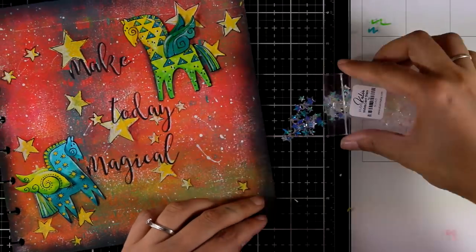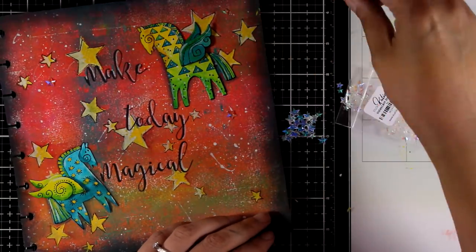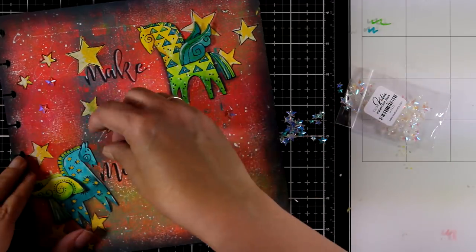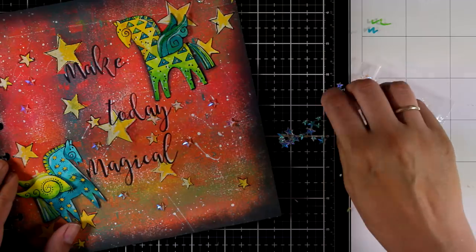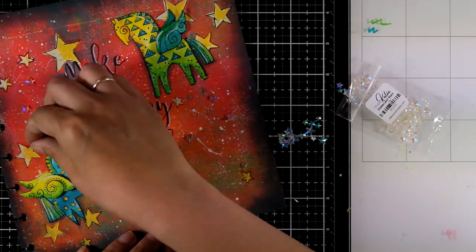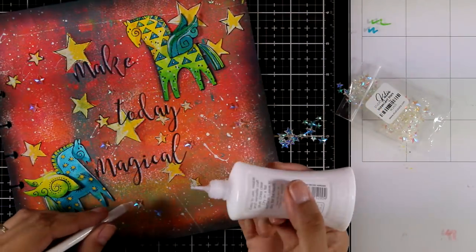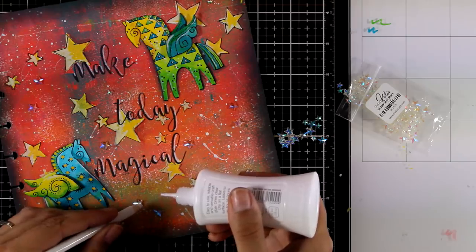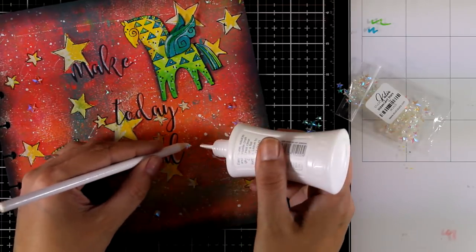You can't have a magical project without some shine so I'm using these iridescent stars by Studio Katia. By the way, you will find everything linked down below just like always. So I have spread out a few of those stars on my background and then I'm going to use my white glue and stick everything down. The white glue is going to dry completely clear so nothing is going to show at the end underneath the stars.